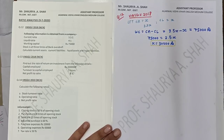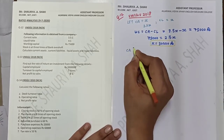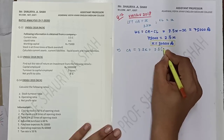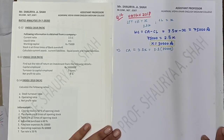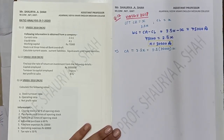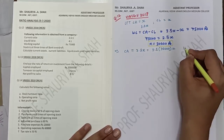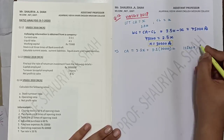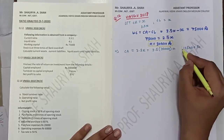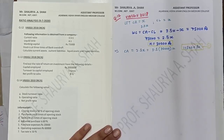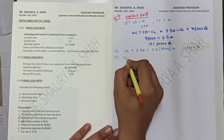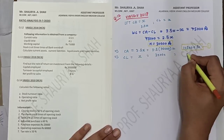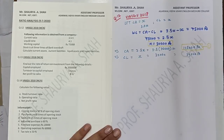Current assets equals 3.5x equals 3.5 into 30,000, which gives 1,05,000 rupees. That is my value of current assets. The second thing asked is current liabilities: current liabilities equals x equals 30,000 rupees, which can be directly given. So out of four things we have calculated two: current assets is 1,05,000 and current liabilities is 30,000.